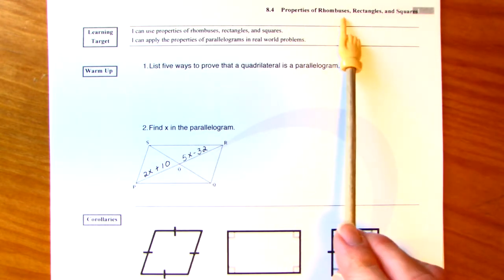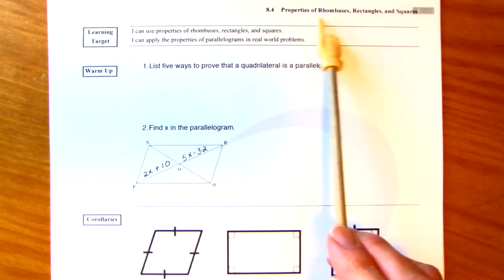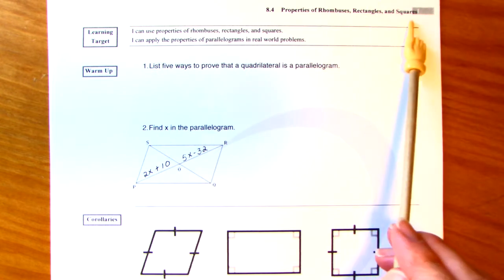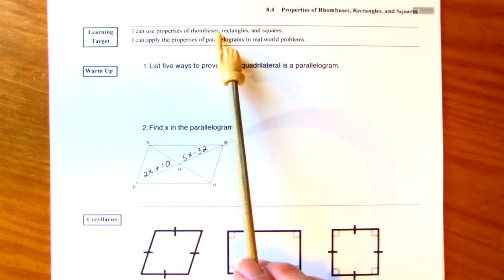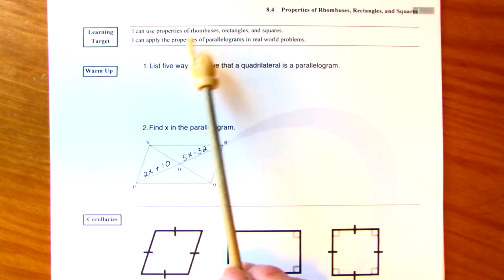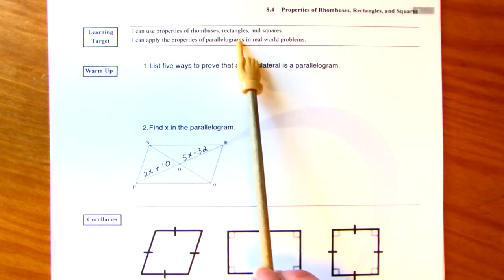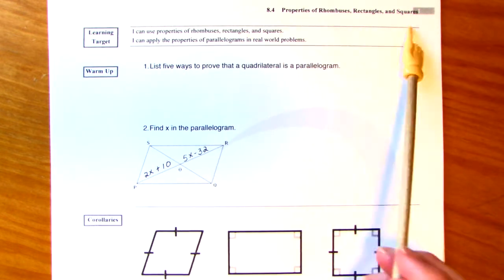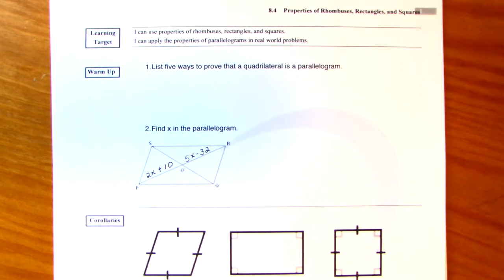We are going to be talking about rhombuses, rectangles, and squares. So I can use the properties of those three quadrilaterals, and I can apply the properties of parallelograms in the real world. Remember, all of these are parallelograms. So specifically, we'll find out why. Here we go.